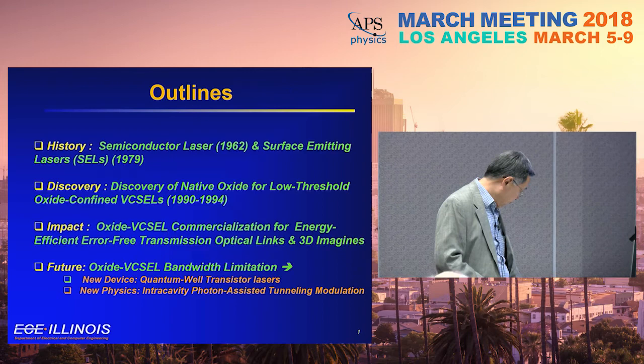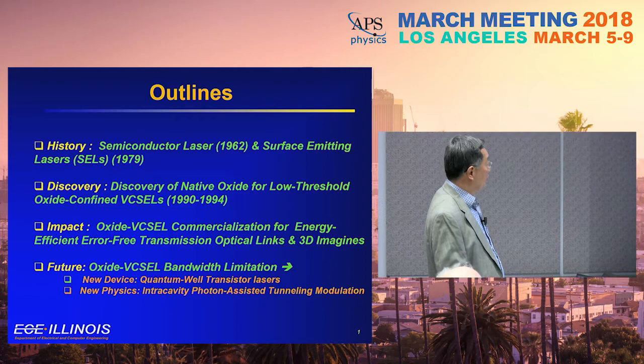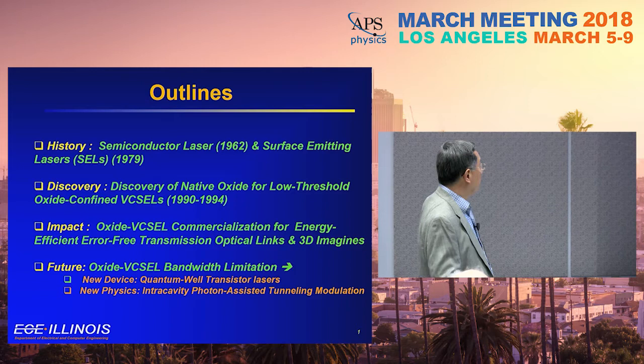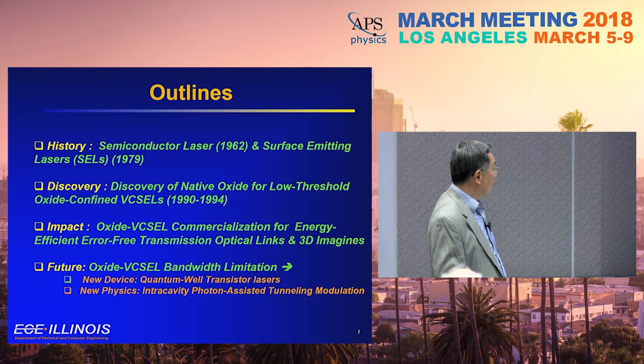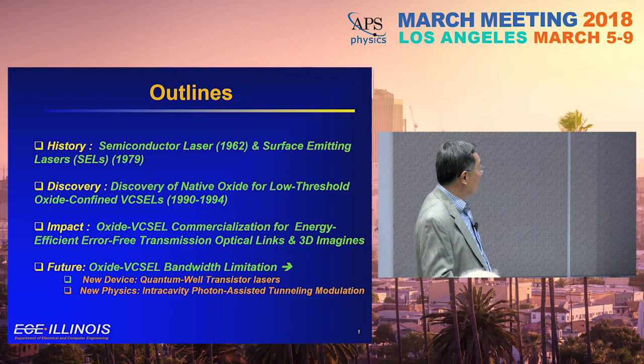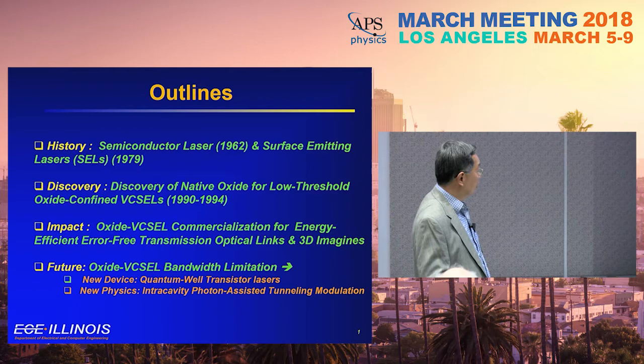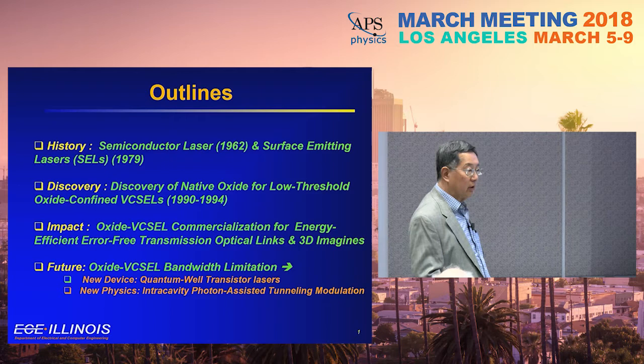My outline: I'll talk a little bit about the history of semiconductor lasers. The semiconductor laser was invented in 1962, and the surface-emitting laser in 1979, several years later. The discovery of native oxide from 1990 to 1994 changed the device threshold current. Then we'll talk about the commercialization impact, providing energy-efficient, high data-rate transmission for optical links and 3D imaging.